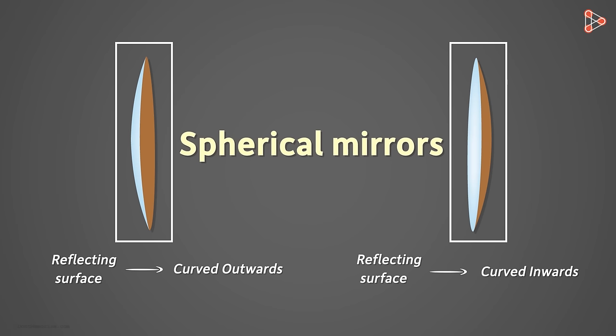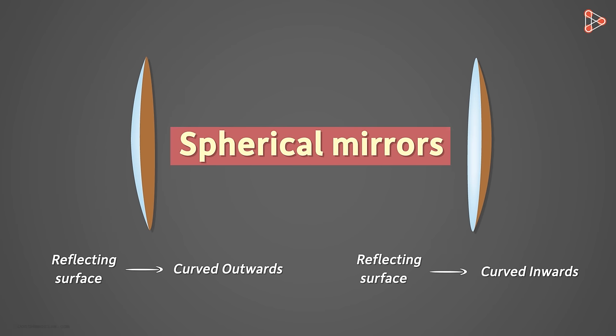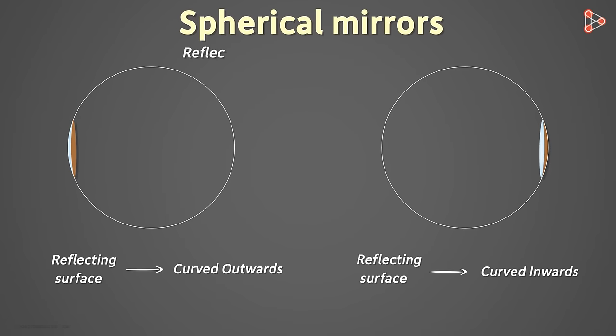Well, they look nothing like a sphere, but then why are they called so? They are called spherical mirrors because their reflecting surface is a part of a sphere. You can clearly see that the reflecting surfaces of both the mirrors form part of the sphere.